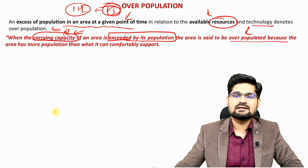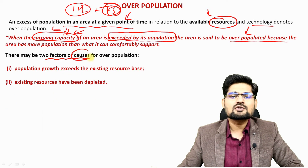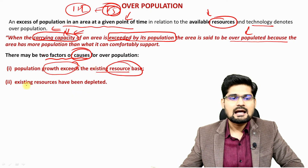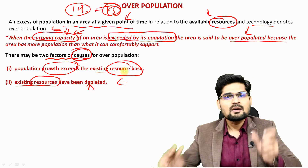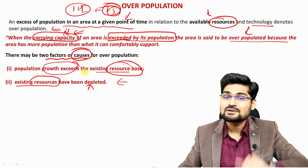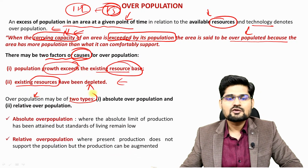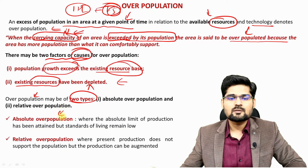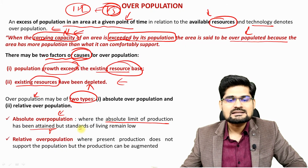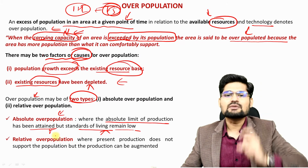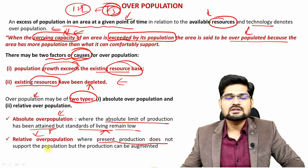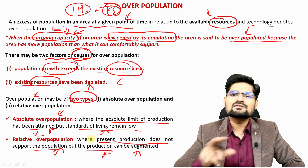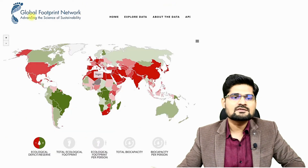When carrying capacity is exceeded, an area is considered overpopulated. Two major causes exist: population growth exceeding the existing resource base, and depletion of existing resources. Overpopulation may be of two types: absolute overpopulation, where the absolute limit of production has been reached yet living standards remain low; and relative overpopulation, where present production does not support the population but production can be augmented or improved.